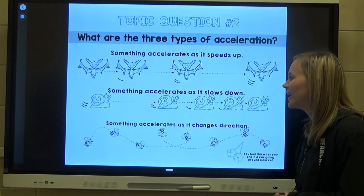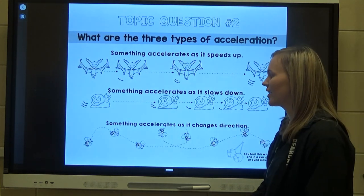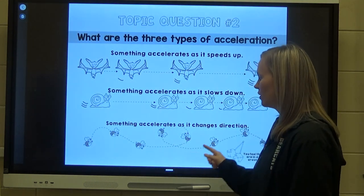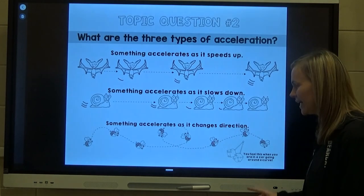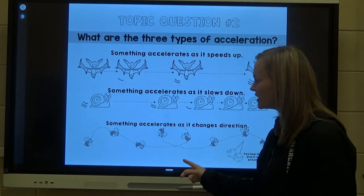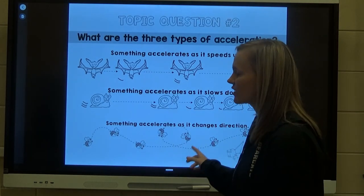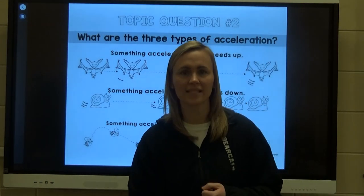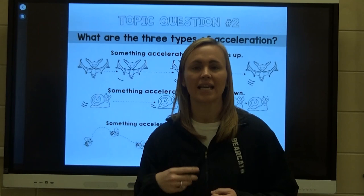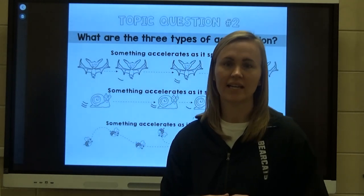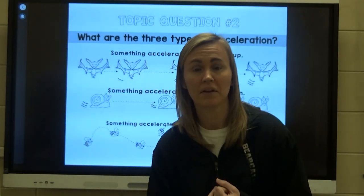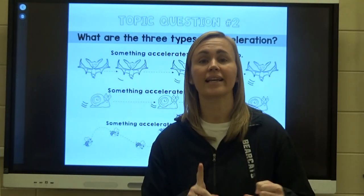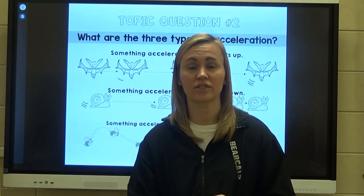Lastly, something can accelerate as it changes direction. This little bumblebee does a loop-de-loop and therefore changes direction. So the three ways something can accelerate are: it can speed up, it can slow down, or it can change direction.